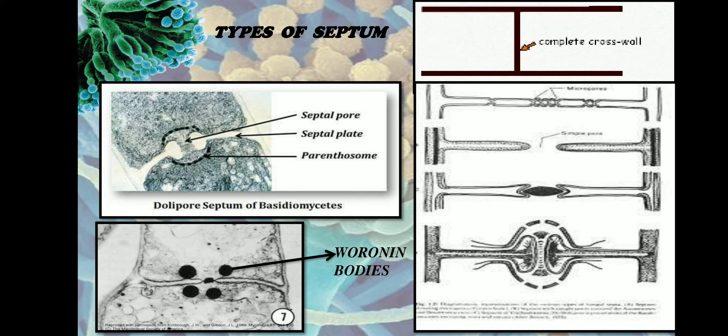Woronin body is a peroxisome-derived dense body which plugs the septal pore after hyphal wounding, restricting the loss of cytoplasm to the site of injury. These are the different types of septum seen in fungi, and Woronin bodies represent a defense mechanism produced in fungi.